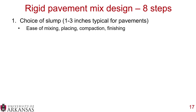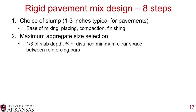Step 1: choose your slump, typically 1 to 3 inches for pavements, which controls ease of mixing, placing, compacting, and finishing. Step 2: choose your maximum aggregate size, generally one-third the slab depth, with at least 3/4-inch clearance between reinforcing bars — this ensures aggregates float in the cementitious matrix rather than making aggregate-to-aggregate or aggregate-to-steel contact.